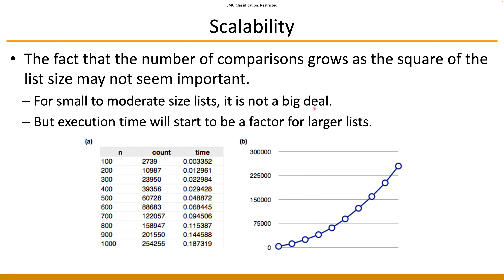In terms of scalability, we have n-squared performance. For small or even large lists, n-squared probably doesn't matter much on our laptops, but keep in mind that the number of operations grows fast — this is a typical curve demonstrated by an n-squared algorithm, and for really large lists we could run into serious computational issues.